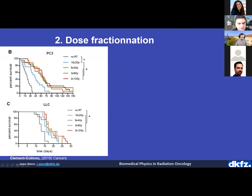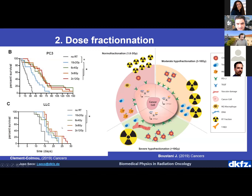Looking at fractionation — which fractionation is better for immune activation? Here are two cancer types: PC3 prostate cancer and LLC lung cancer, with regimes of 10×2, 6×4, 3×8, and 2×12 Gy. For prostate cancer, 6×4, 3×8, and 2×12 show the best results. For lung cancer, 2×12 and 3×8 are among the best. Fractionation plays a critical role. Standard fractionation with small doses per fraction produces a very poor immune response.